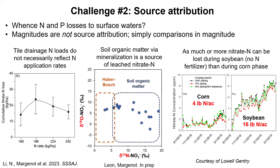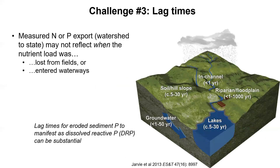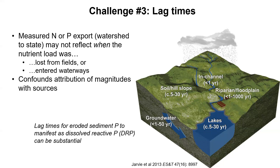The importance here is that magnitudes are not source attribution. Just because you estimate 18 pounds of nitrate leached doesn't mean it came from fertilizer — it could have come from SOM in the case of nitrogen. The third challenge broadly is lag times: when we lose the nutrient, be it nitrate or phosphorus, the time from when it's lost to when it's detected at a gauge may be substantial. These legacy times complicate our understanding of where things come from, and this is especially the case for phosphorus.